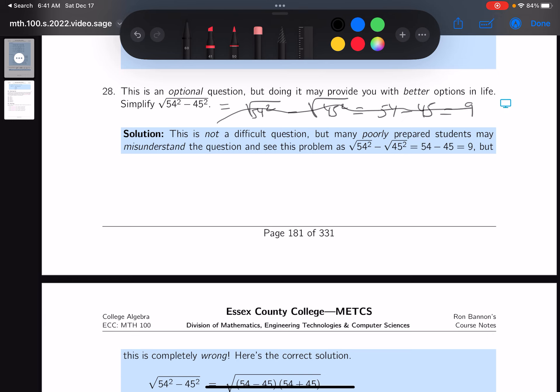This is wrong, though. So let's go through it, and I'm going to simplify the radicand. That's 54 squared minus 45 squared. It's a difference of perfect squares.